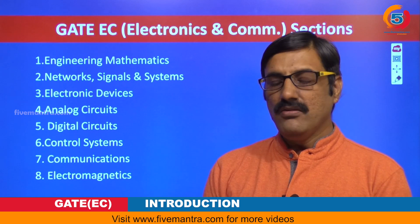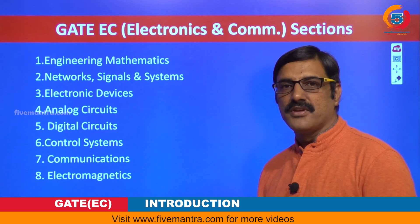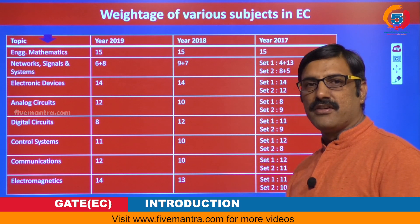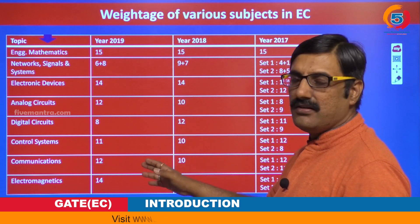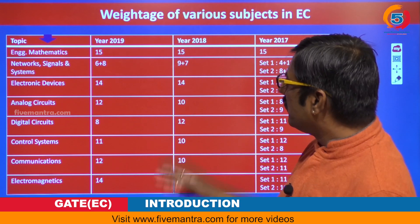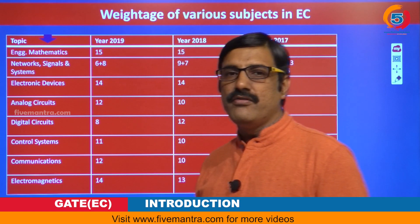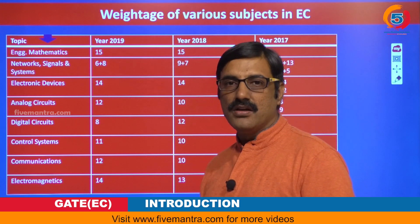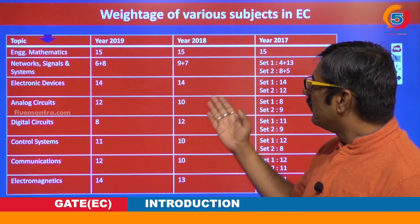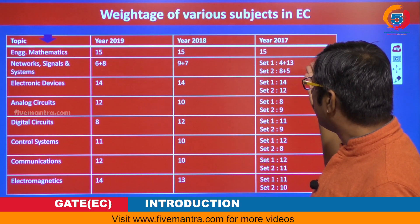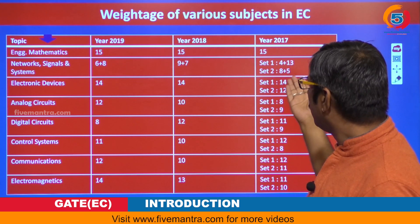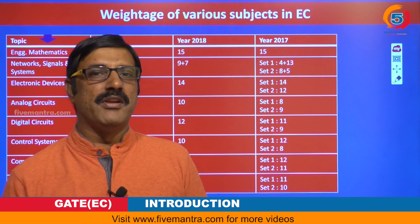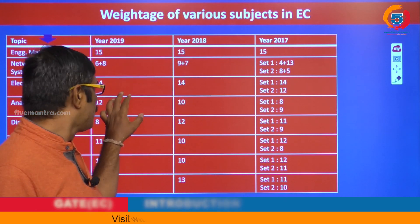Each subject in your four-year engineering course has its own weightage. Let me show the weightage of different subjects in electronics as per 2019, 2018, and 2017. Engineering mathematics has maintained a common weightage of around 15 marks. For networks and signals and systems combined, the weightage was 14 marks in 2019, 16 marks in 2018, and around 17 in Set 1 and 13 in Set 2 of 2017 — so the general weightage is between 13 to 16 marks.